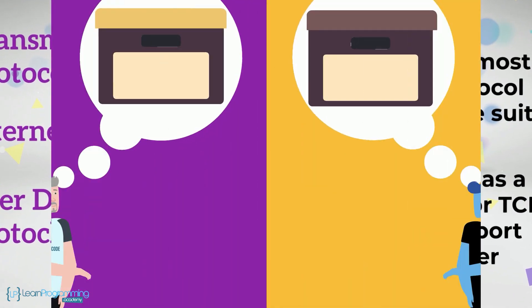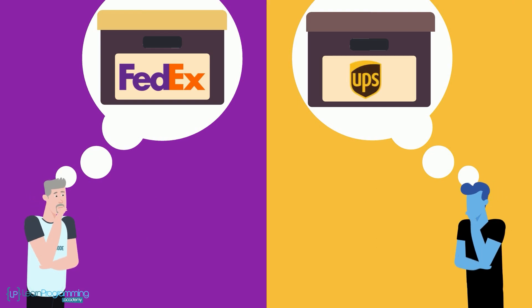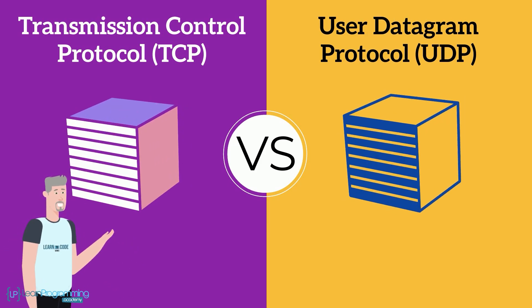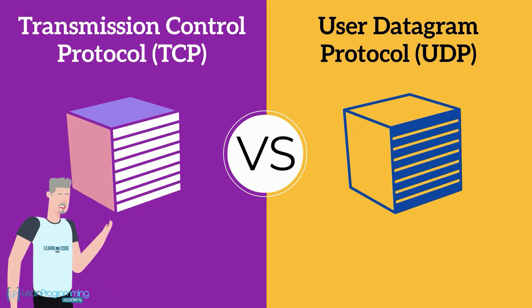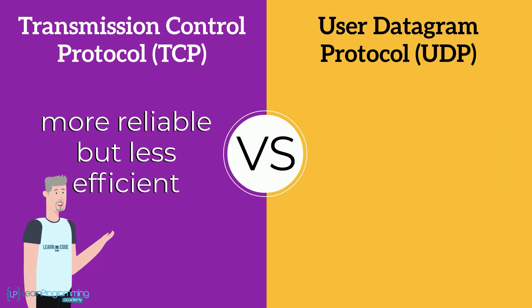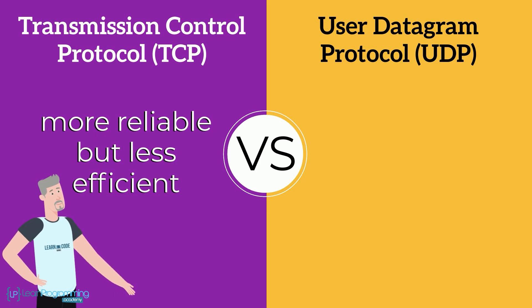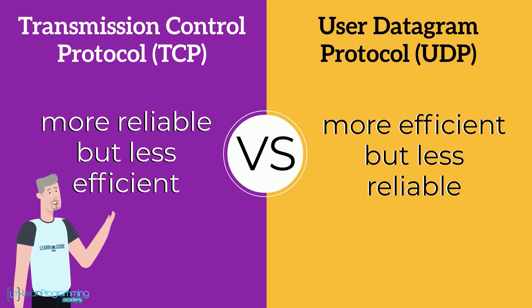For example, in the real world, one might choose FedEx to transport a package, whereas another person may choose UPS. What's the basic difference between TCP and UDP? Well, besides structural differences in how the packaging of a message is done, basically TCP is thought to be more reliable but less efficient than UDP, whereas UDP is thought to be more efficient but less reliable than TCP.